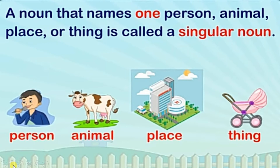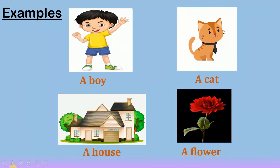A noun that names one person, animal, place or thing is called a singular noun. Nouns that are one in number are called singular. For example, a boy, a cat, a house, a flower. These are all examples of one thing — one boy, one cat, one house, one flower. So, it's a singular noun.